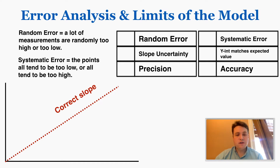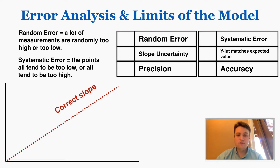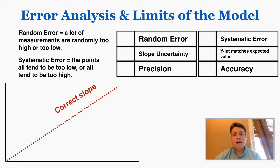I'm going to show you a picture using this graph with a correct slope. Random error is connected to slope uncertainty, which is connected to precision. Systematic error is connected to whether your slope and y-intercept match their expected values and how accurate your graph is.